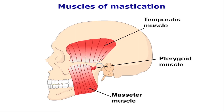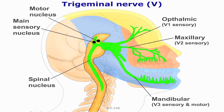The motor component supplies the muscles of mastication — that is the masseter, temporalis, and the pterygoids. The sensory component supplies the skin of the face, the cornea, and general sensation to the mouth.